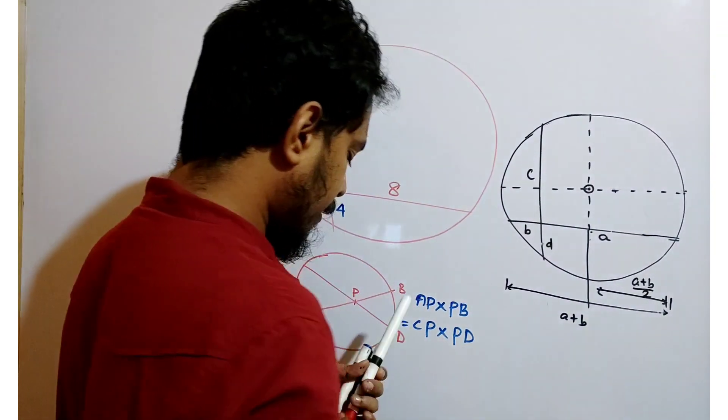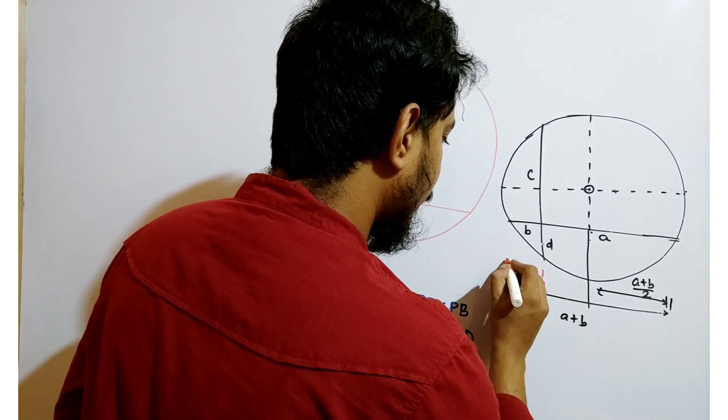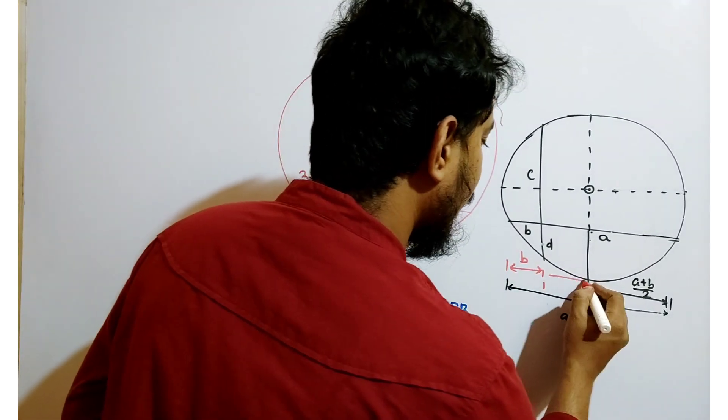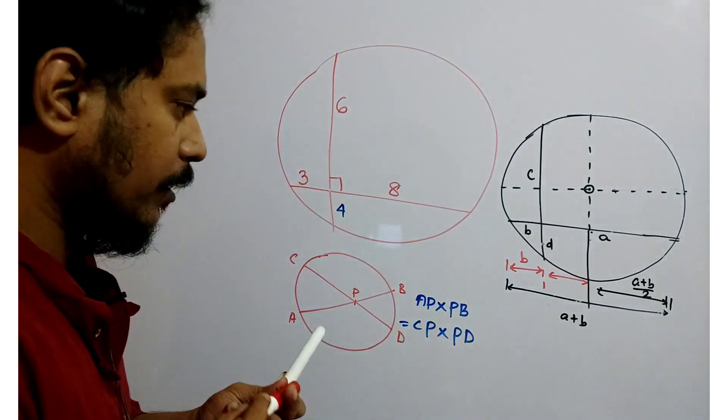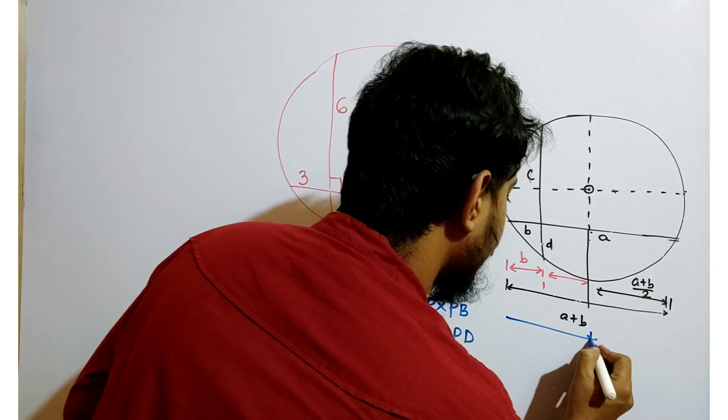And similarly, this part is also A plus B by 2. But this length is B. So what will be the length of this part? Total length of this part is A plus B by 2.